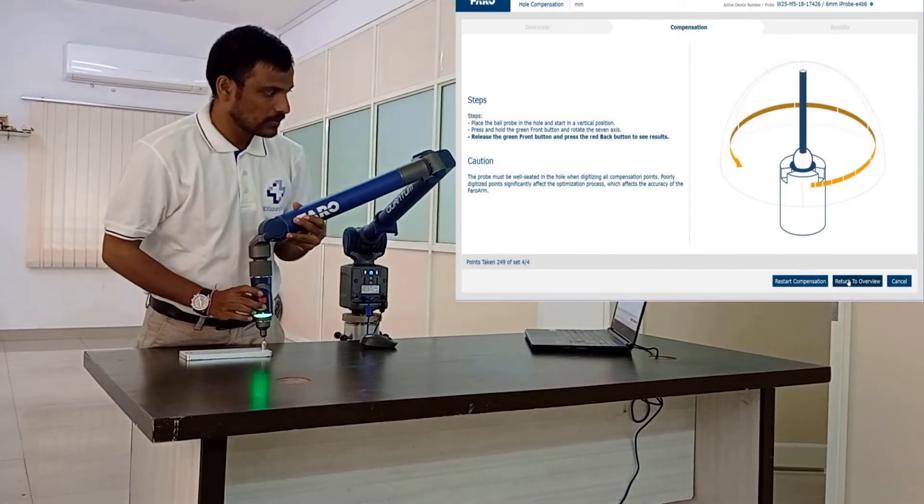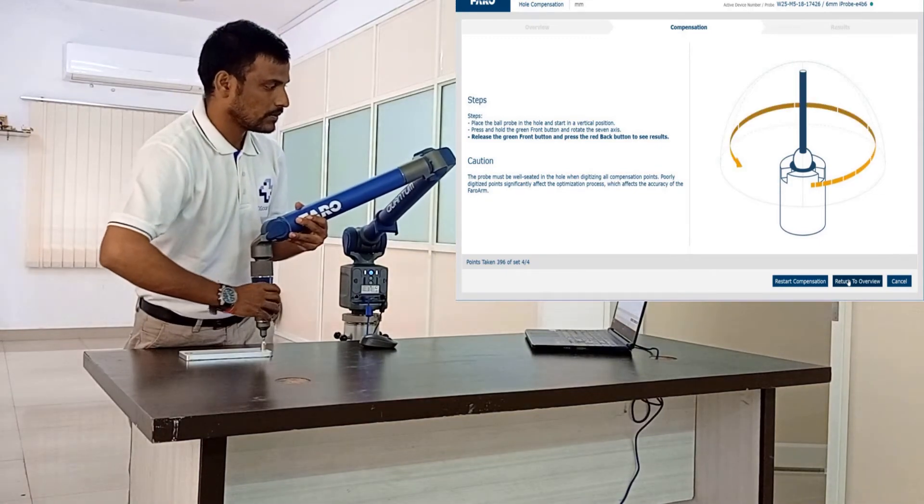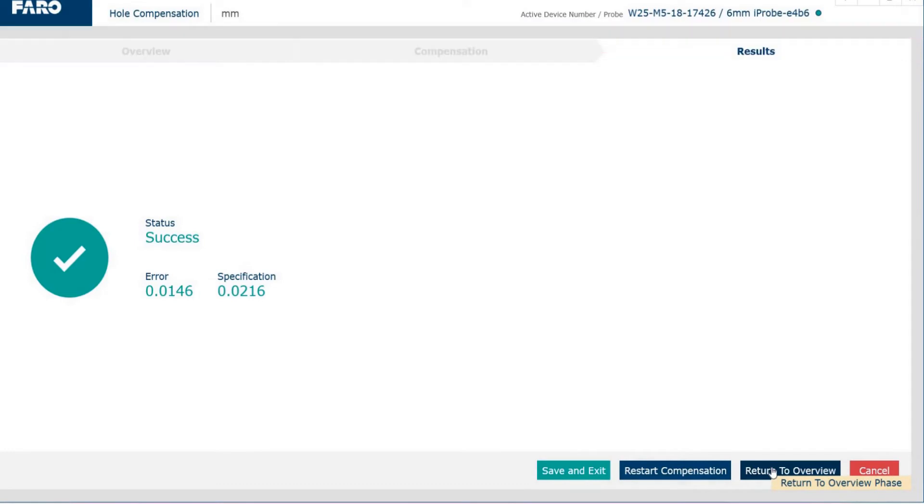Rotate the 7th axis after pressing the green button. Then release the green button and press the red button. There you might be getting a success. If not repeat the steps.